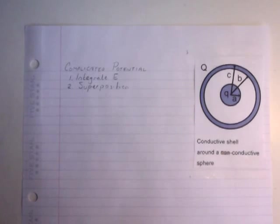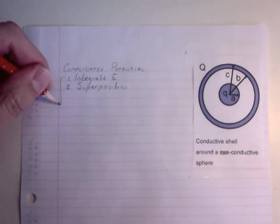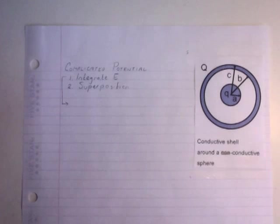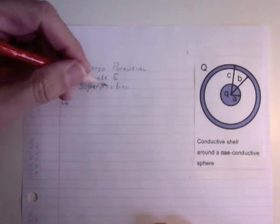Okay, now what I'm going to do is a slightly more complicated potential problem. This is not any more complicated if we just use integrating the E field, and that's what I'm going to do first. It's more complicated than it was before if you do superposition, but I want to demonstrate that there is the ability to use superposition, but it makes it a little more difficult than it ordinarily would be.